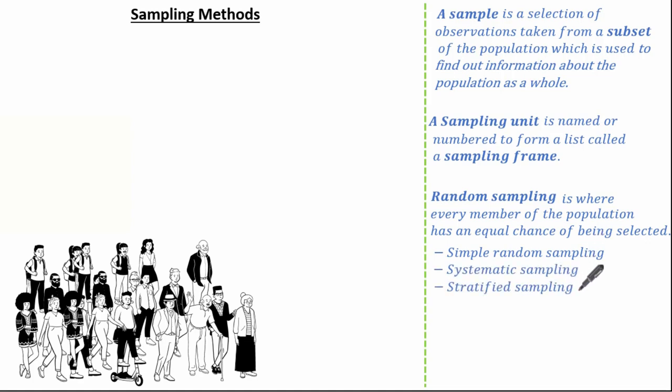There are three types of random sampling: simple random sampling, systematic sampling, and stratified sampling.